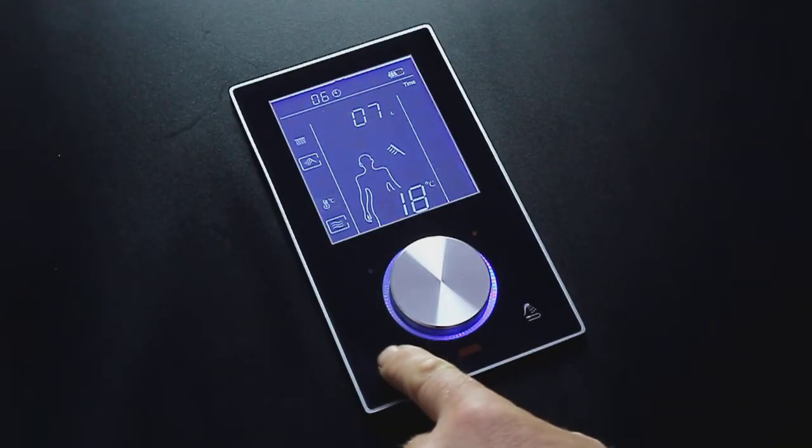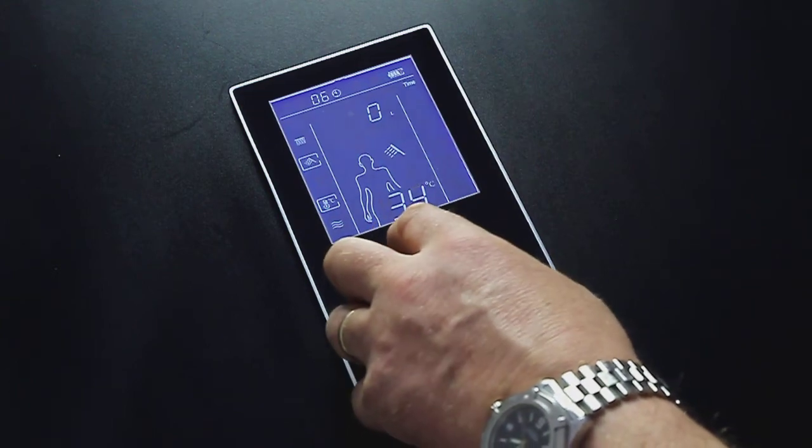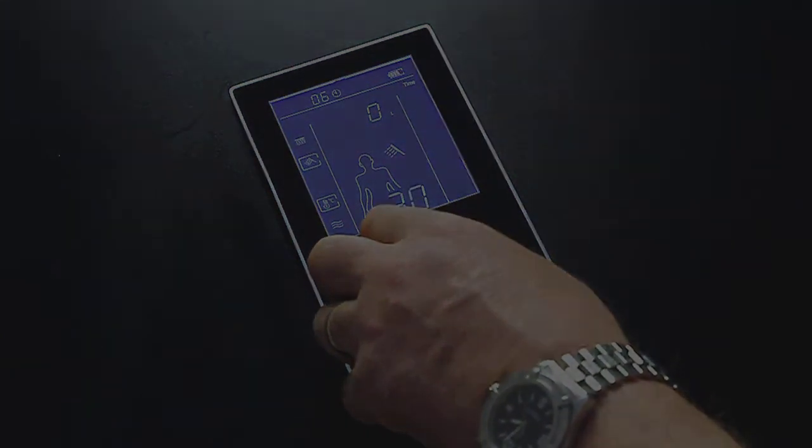To change the temperature press the mode button on the left and the control wheel will switch to controlling the temperature.